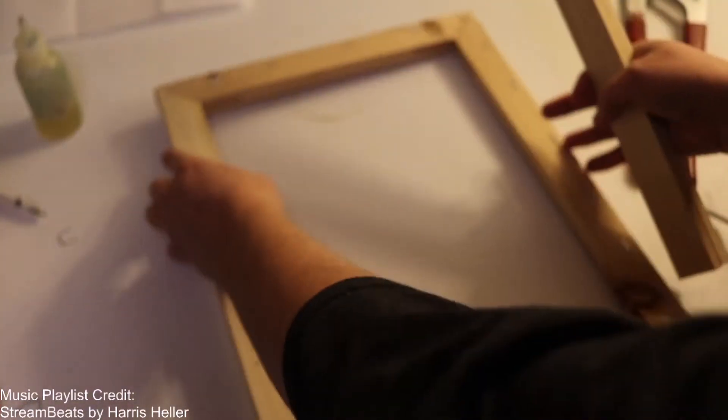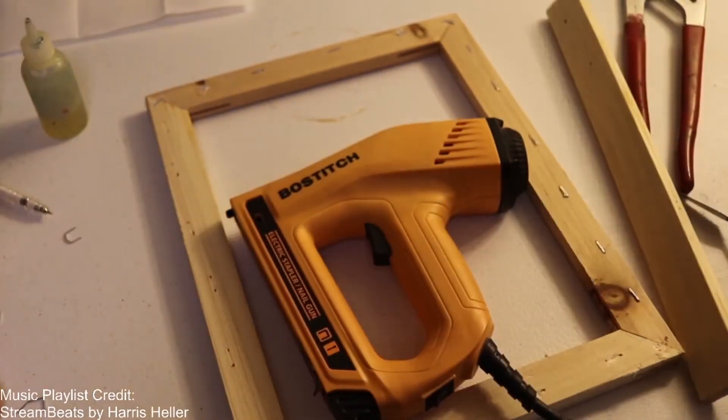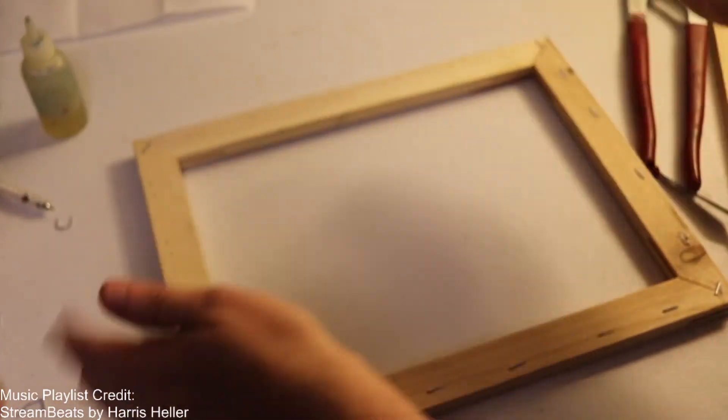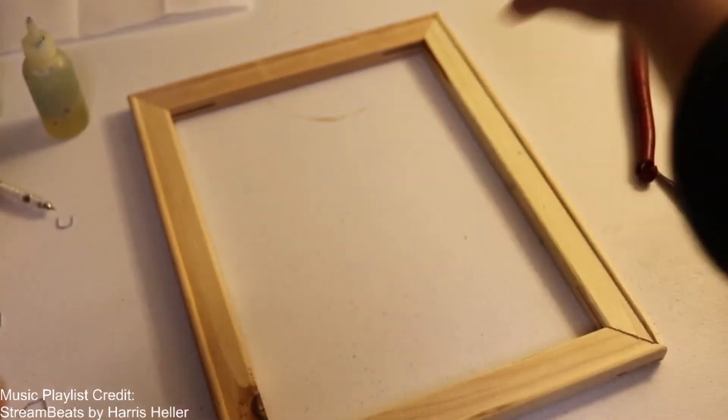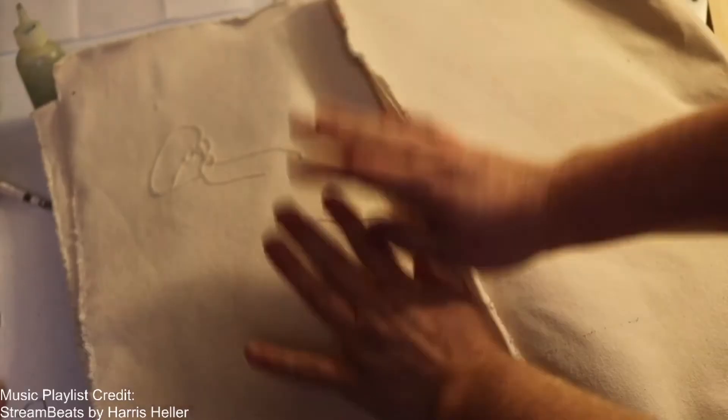And then you do it on this side preferentially. And then you take, what you do is you get your staple gun. And then once you have it measured and stapled together, you're like, yes, beautiful, I have my frame now. Whatever, what's my next step to do? Then you get the clean canvas, nice and pretty.